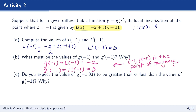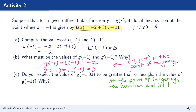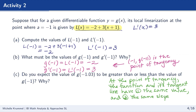If the question asked for g of negative 2, we wouldn't be able to answer — we can only equate g and l at the point of tangency, not at other points. This is conceptually very important: at the point of tangency, the function and its tangent line have the same value and the same slope.